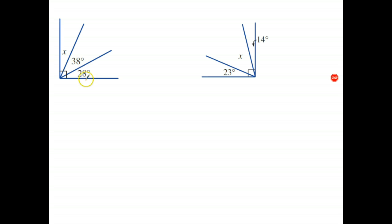Okay, so I know that these three angles add to 90 degrees, so I can write x plus 38 plus 28 equals 90. Okay, now what I have to do is simplify. So 38 plus 28, well 30 plus 20 is 50, plus...